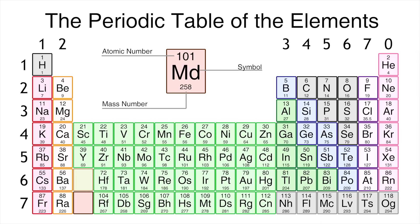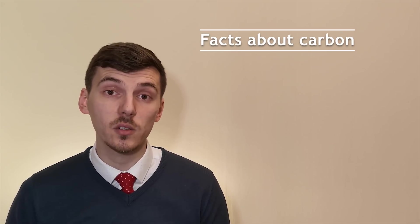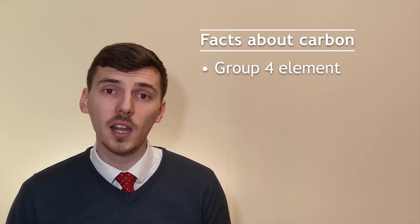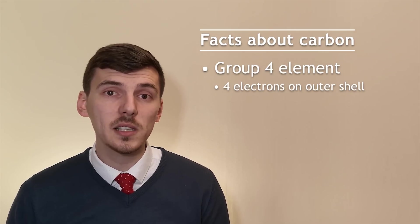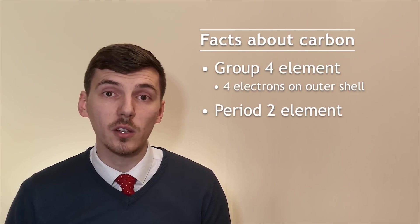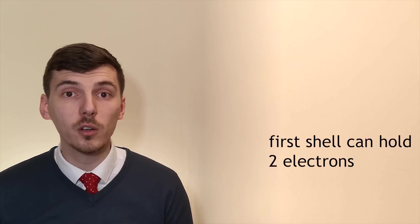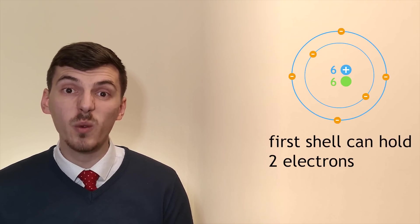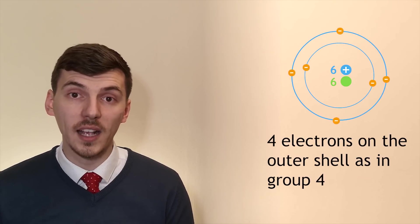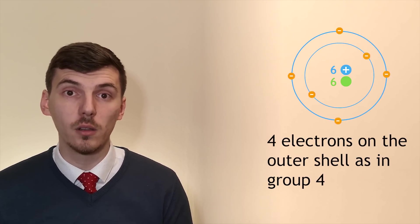If we use carbon as an example we can see that it's in group 4. We can also see that it's on the second period of the periodic table. That tells us two things. Because it's in group 4 it's gonna have four electrons on its outermost shell and because it's in the second period that means it's gonna have two shells of electrons. We know the first shell can be filled up to two so we can draw our first shell with two electrons in it and we know because it's in group 4 it has four electrons on its outer shell. So its electron configuration is 2, 4.